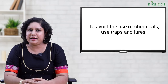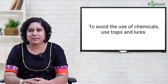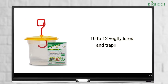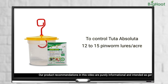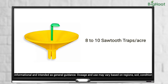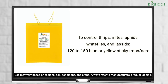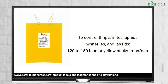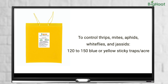Alternatively, if you wish to avoid the use of chemicals, you can use traps and lures. For instance, you can use 10 to 12 veg fly lures and traps per acre. For Tuta absoluta, use 12 to 15 pinworm lures per acre. You can also use 8 to 10 SAW 2 traps per acre, or 120 to 150 sticky traps, both blue and yellow, per acre. Sticky traps are ideal for controlling sucking pests like thrips, mites, aphids, whiteflies and jacets.